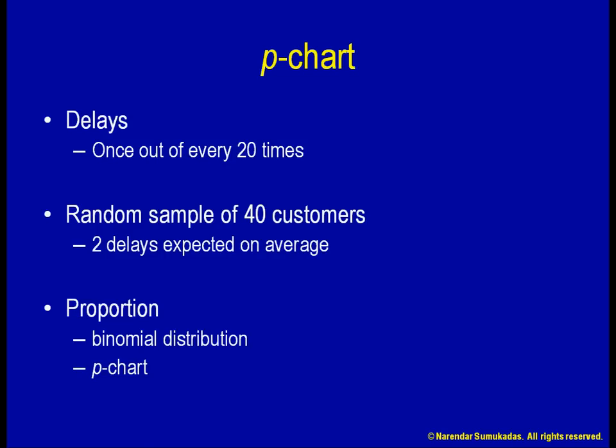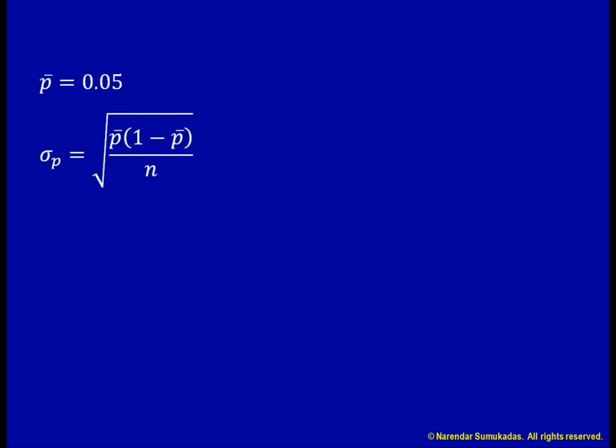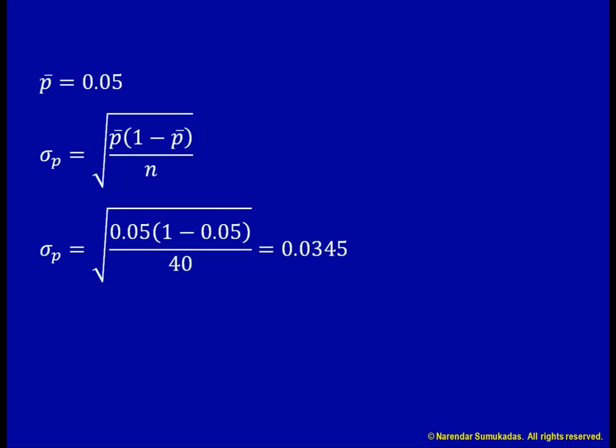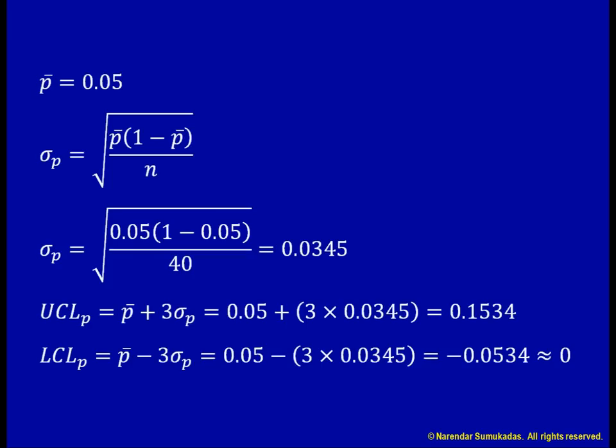Given that, on average, a delay happens once out of 20 times, the average proportion delayed, or p-bar, is 0.05. This p-bar will be the centerline of my control chart. The standard deviation of this proportion, sigma p, can be calculated using the formula shown. Once I know the standard deviation, I can calculate the UCL and LCL as the mean plus or minus three standard deviations. Note that the proportion must always be between 0 and 1. I cannot have a negative number of delays, so I can truncate the LCL at 0.